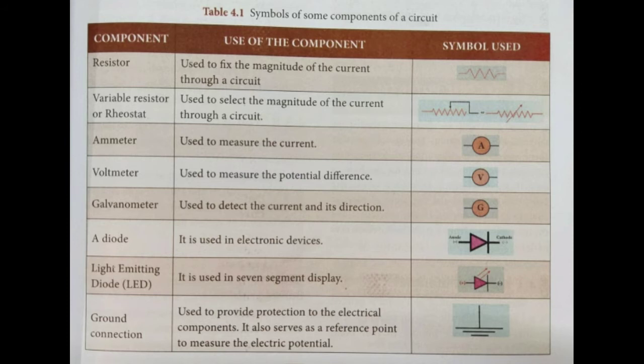Electrical components. The electric circuit given in figure 4.2 consists of different components such as a battery, a switch, and a bulb. All these components can be represented by using certain symbols. It is easier to represent the components of a circuit using their respective symbols. Now, we will look into the table for the symbols.